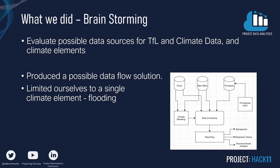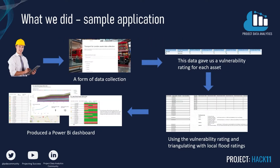For this project, we decided to evaluate a single element: flooding. The team needed to work out how data could be collected from future assets added to the TfL network. The initial idea was to start with a Microsoft Form to collect this data from engineers when the asset was installed. We moved on to create a more robust data collection method. Collecting this asset information gave the team initial data to work with, and using local flood-level data, we were able to model vulnerability ratings and work out RAG ratings for each asset.